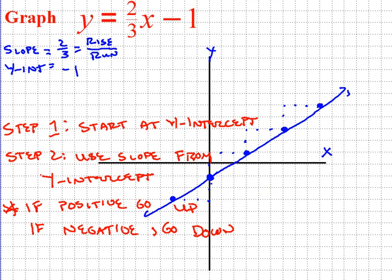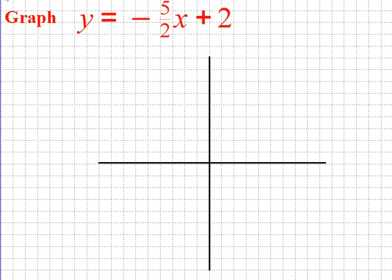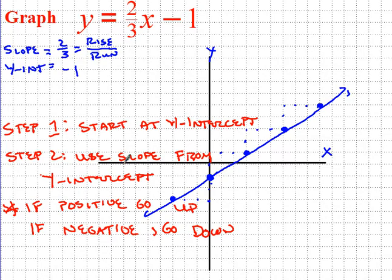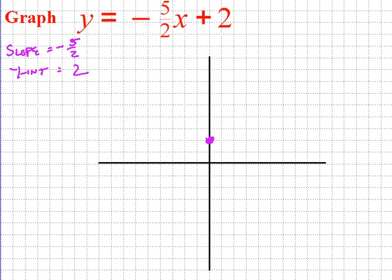Here's the next example. I identify my slope as negative 5 over 2 and my y-intercept as positive 2. Step 1: start at the y-intercept, positive 2 — I already have a point on the line. Step 2: use the slope from the y-intercept. Because my slope is negative, instead of going up 5 over 2, I'm going to go down 5 — that's 1, 2, 3, 4, 5 — over 2 to the right. The negative slope means I go down first.